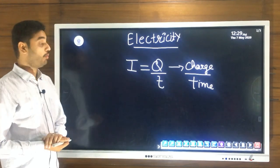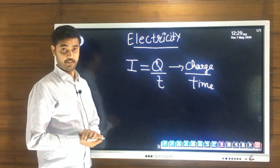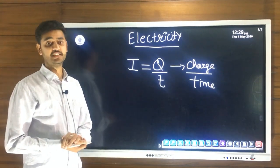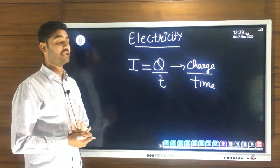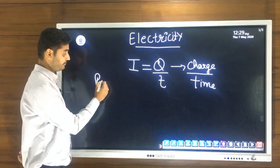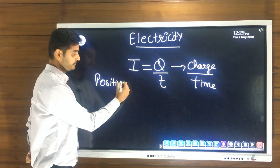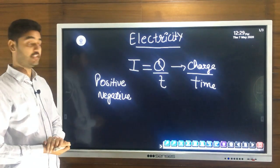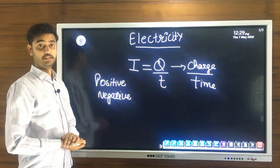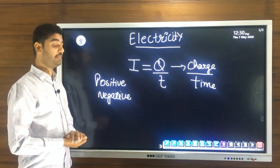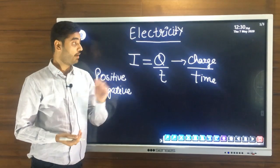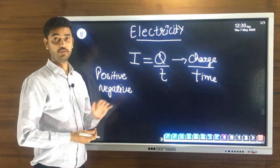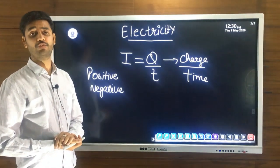Today we will discuss the direction of current. In the 17th century, we knew only two types of charges — positive and negative. Electrons were not known at that time, so electric current was called the flow of positive charges.